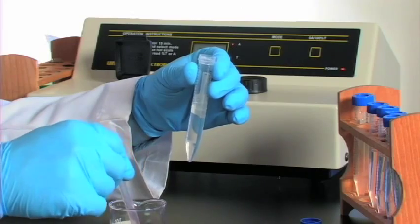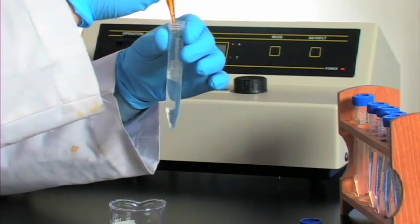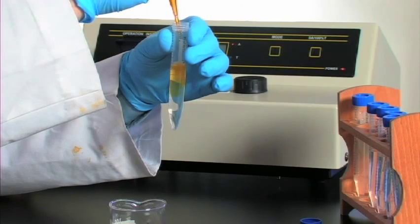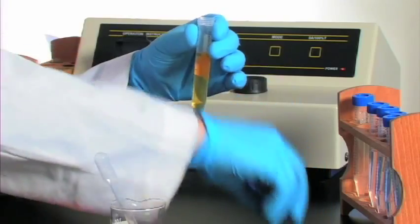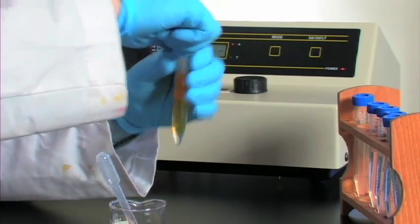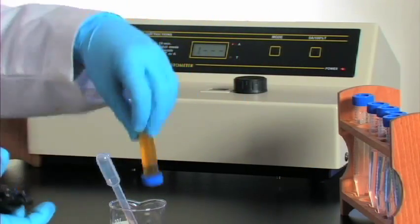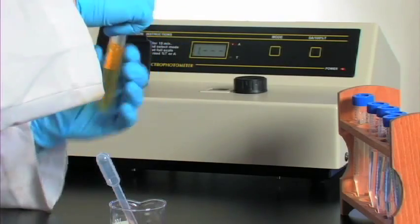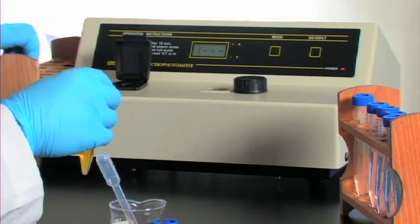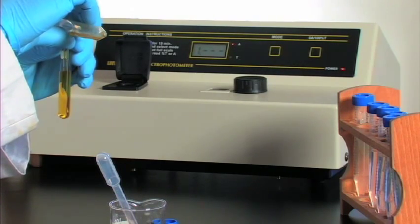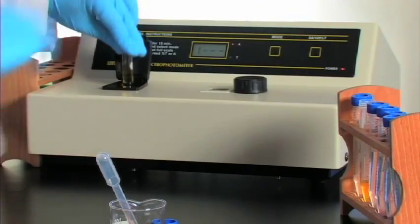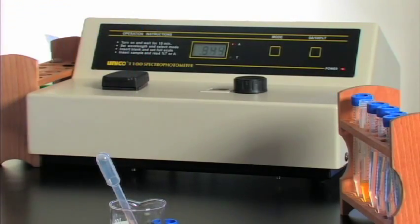Remember in tube number two there's a higher concentration of acetone. So we start the reaction and now with the increased amount of acetone we're going to take a look at how this affects the disappearance of the iodine. We quickly and carefully transfer it to the cuvette, place it, and watch what happens.